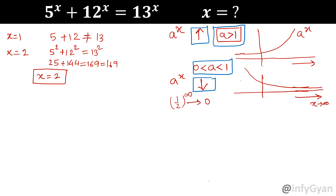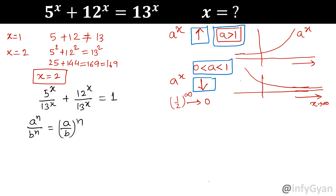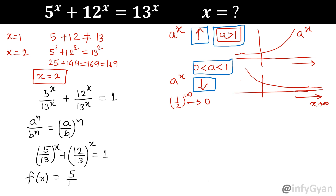Now let us consider our equation again. I am dividing the equation by 13 to the power x. So 5^x over 13^x plus 12^x over 13^x equals 13^x over 13^x, which is 1. Using the exponent property, this converts into (5/13) to the power x plus (12/13) to the power x equals 1.